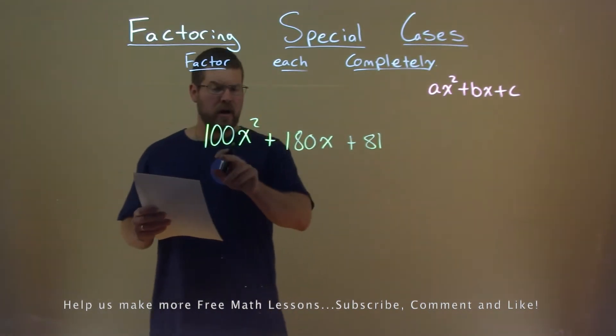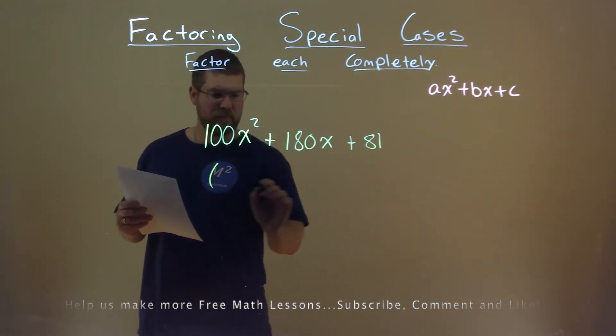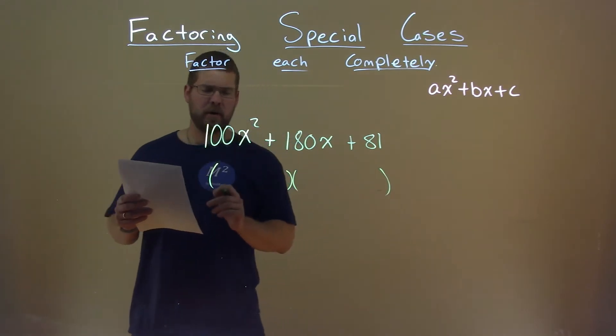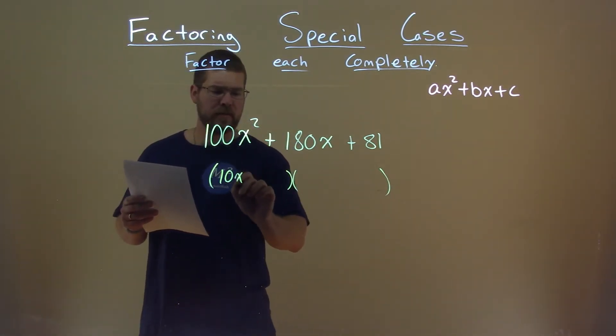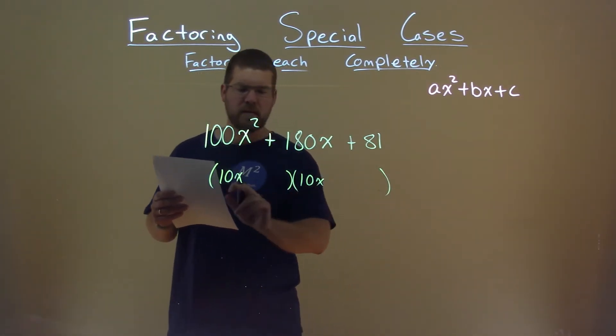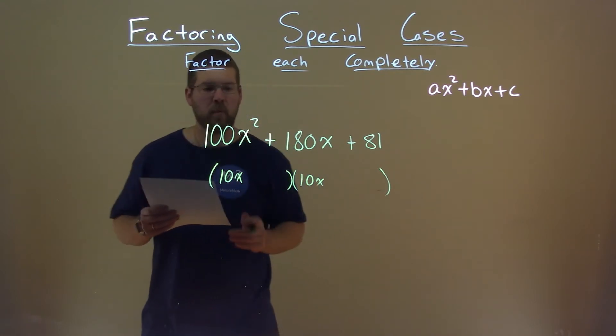Well notice my a value is 100, square root of 100 is 10, so it's a perfect square, especially with the x squared. So, if we have 10x here and 10x here, 10x times 10x gives me 100x squared.